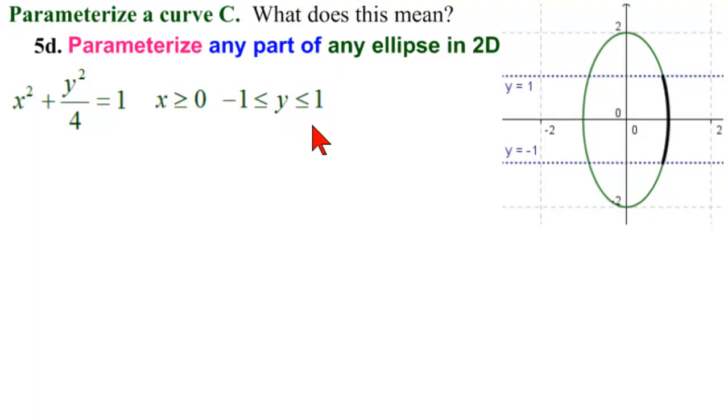Now remember that we called this going angular. We are going angular with our parameter, but very carefully. In what sense?